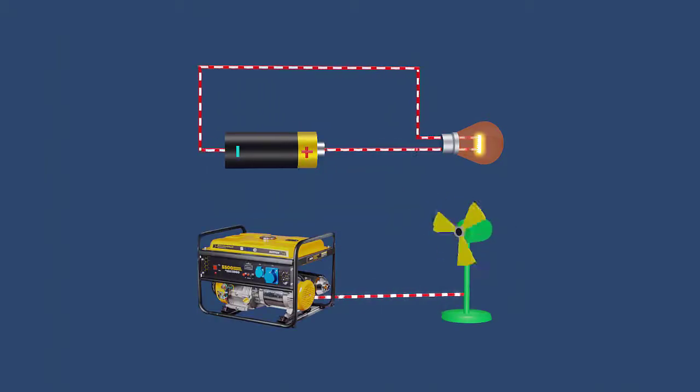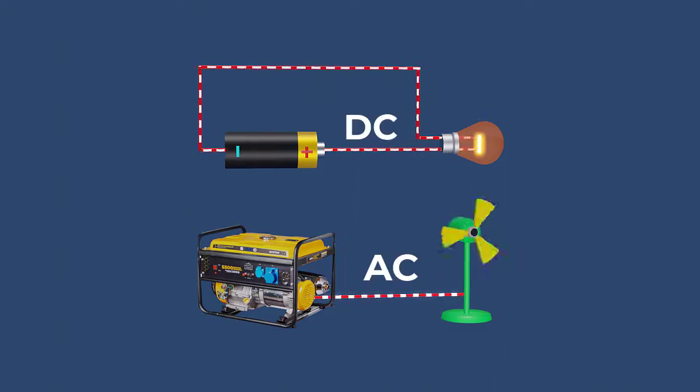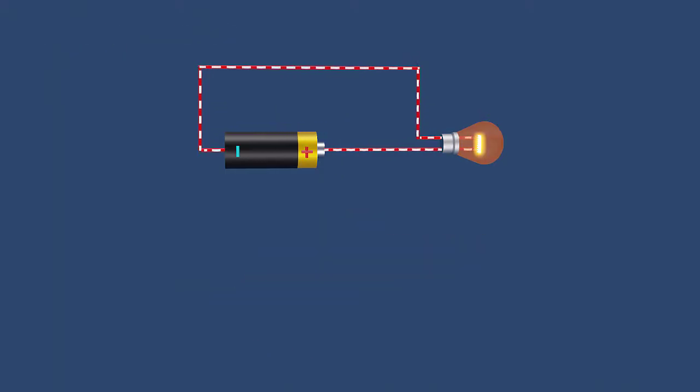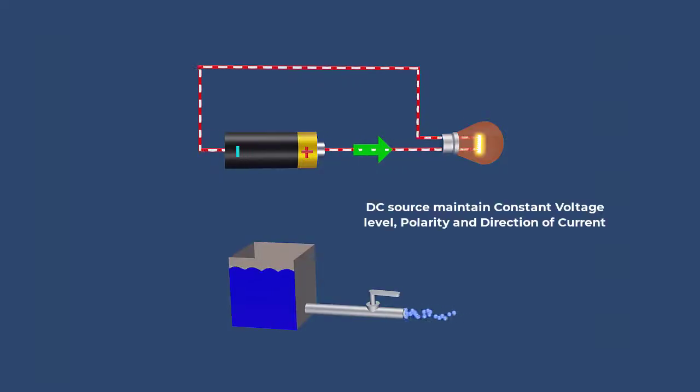There are two distinct types of current that can power our devices: AC and DC. Direct current comes from batteries and solar panels. It's a steady flow of charges in one direction, like water through a straight pipe. A DC source maintains a constant voltage level, polarity, and direction of current.